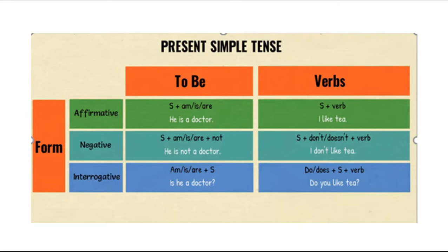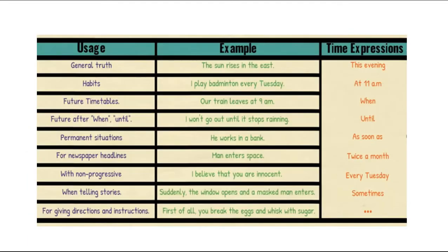Let's see present simple tense — form: affirmative, negative, and interrogative. Usage examples: general truth — 'The sun rises in the east.' Habits — 'I play badminton every Tuesday.' Future timetables — 'Our train leaves at 9 a.m.' Future after 'when' and 'until' — 'I won't go out until it stops raining.' Permanent situations — 'He works in a bank.' For newspaper headlines — 'Man enters space.'